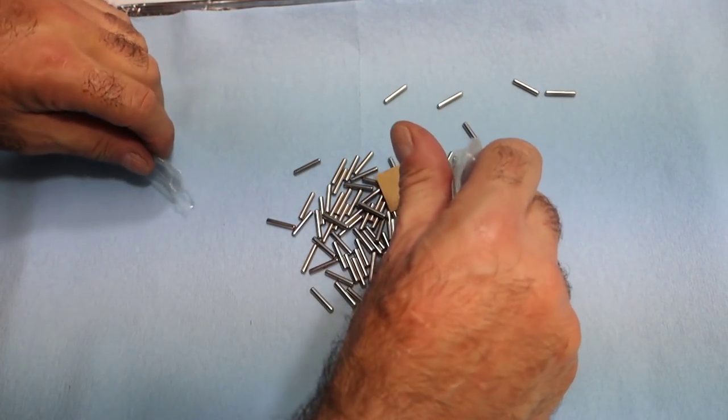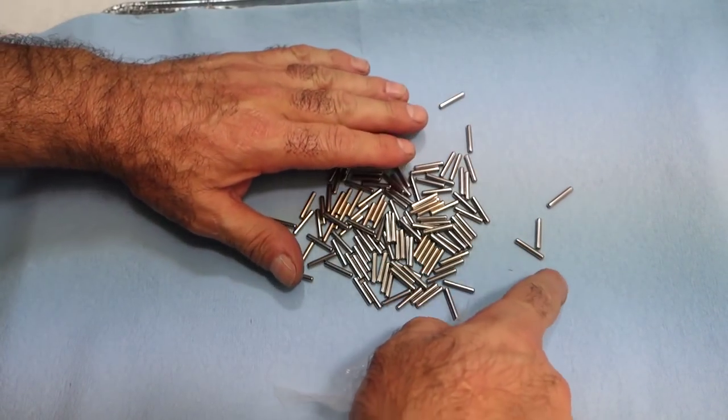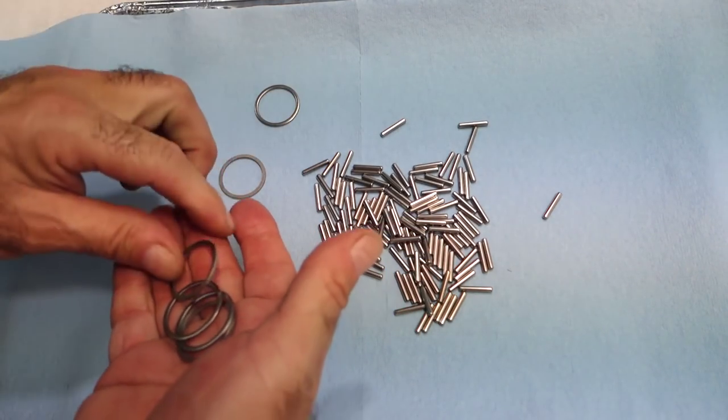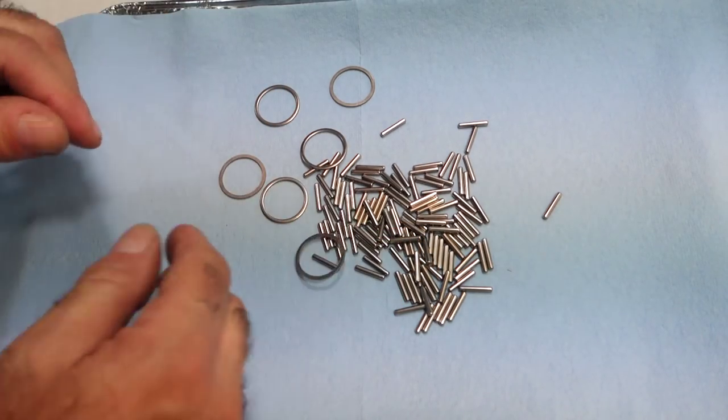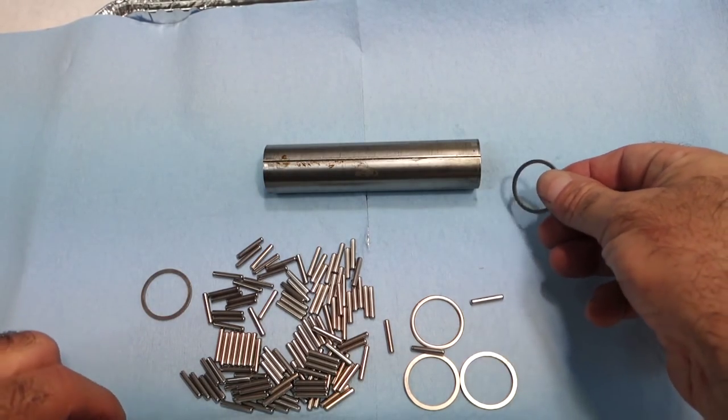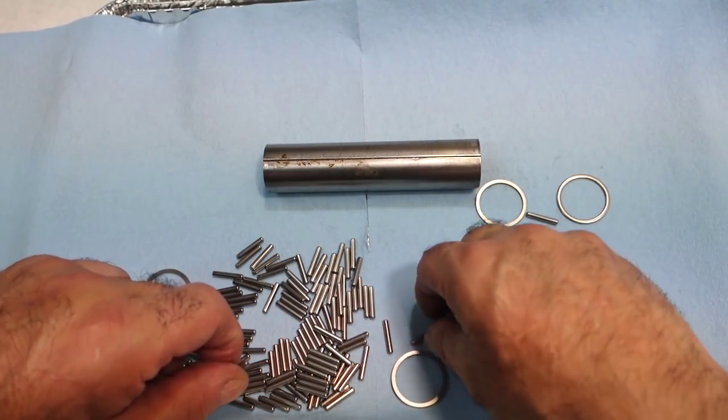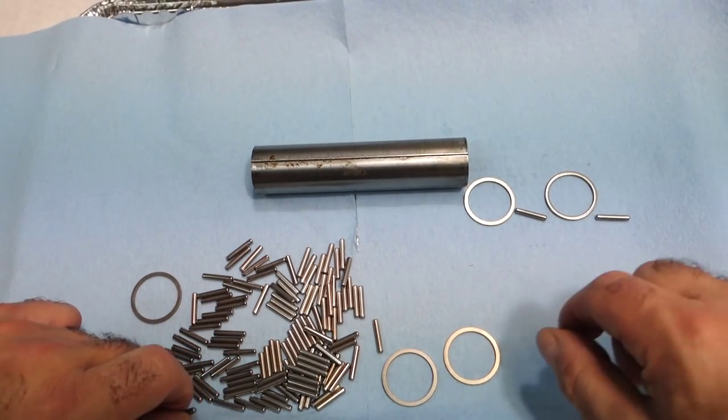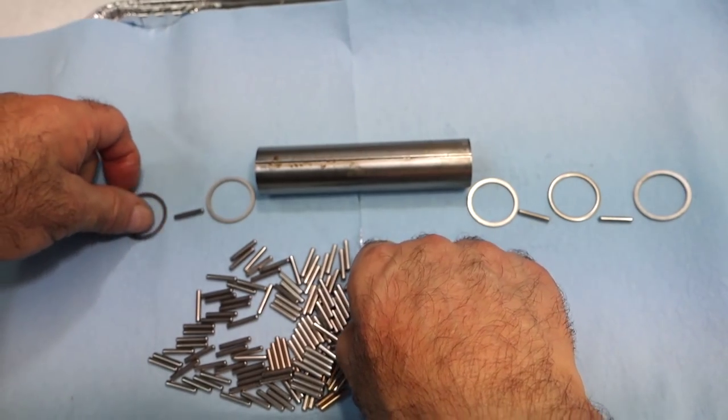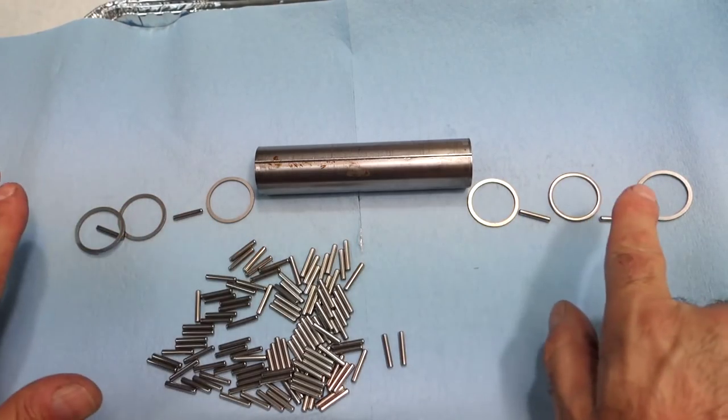This is a one-inch countershaft kit, so it's going to have the .120 inch diameter needles. That's going to have six of these spacers. The way it works is you get the tube, a spacer, a row of needles, spacer, row of needles, and a spacer.